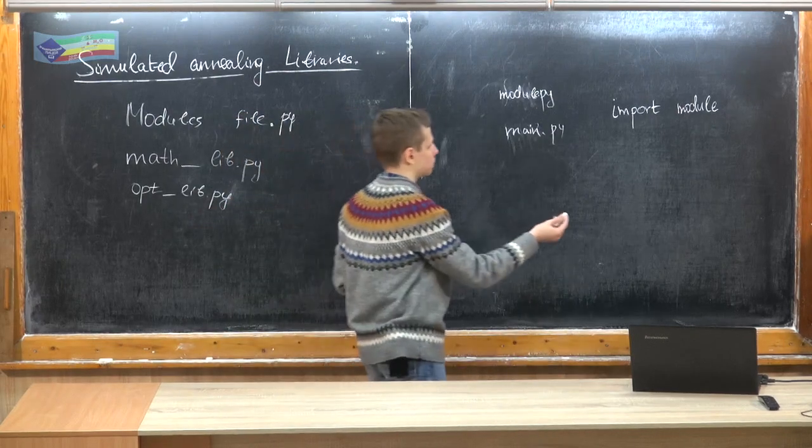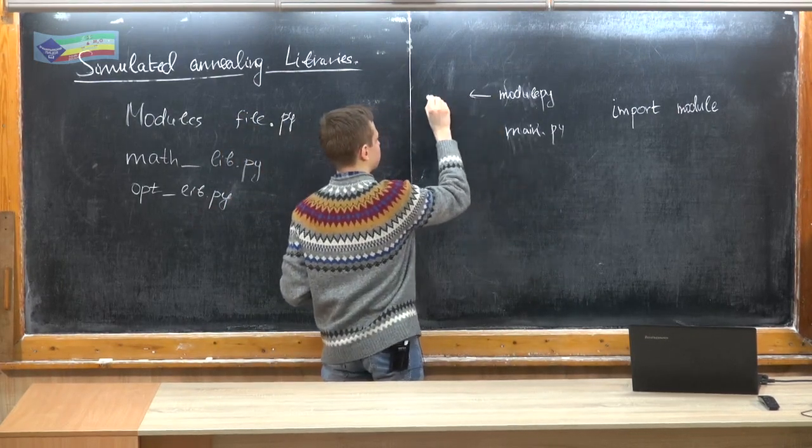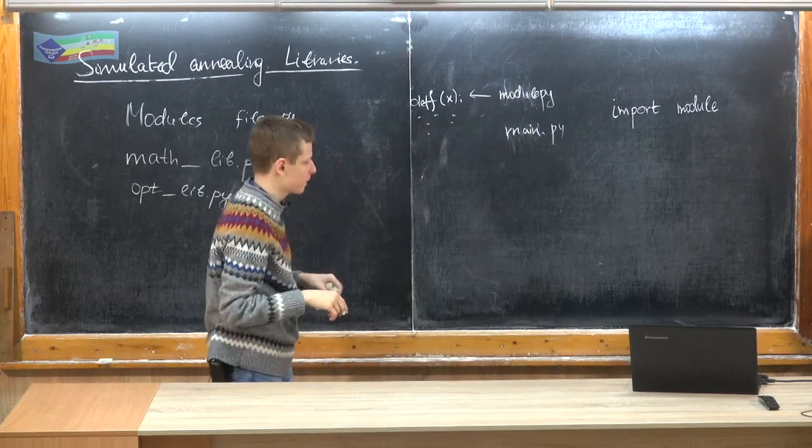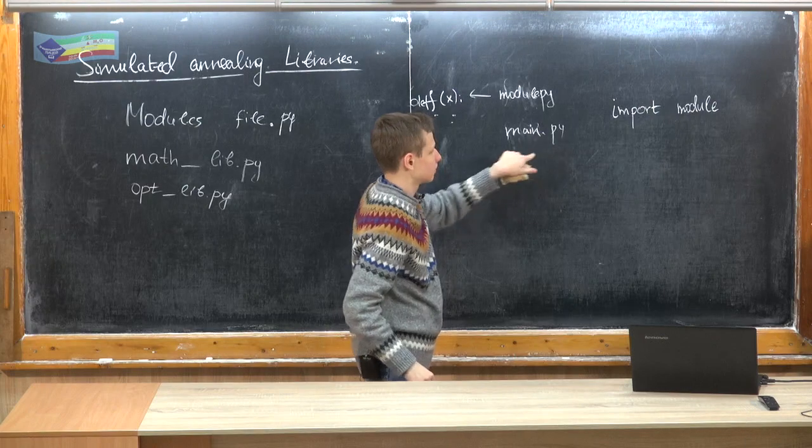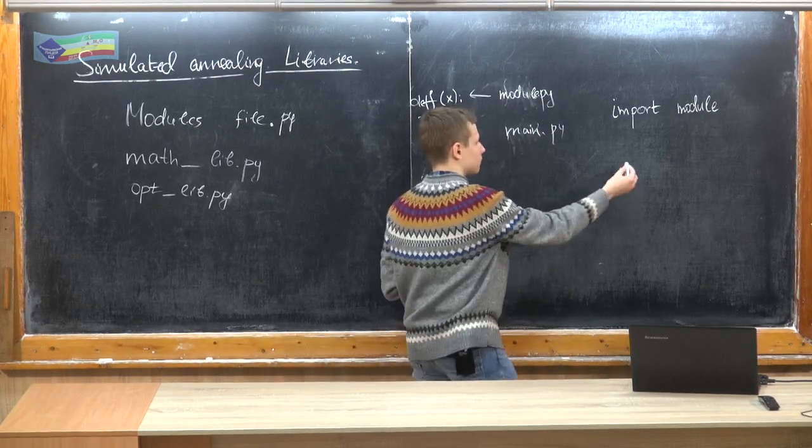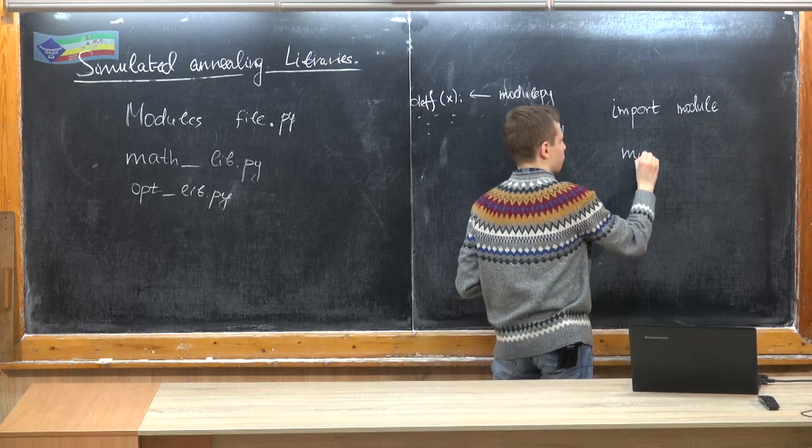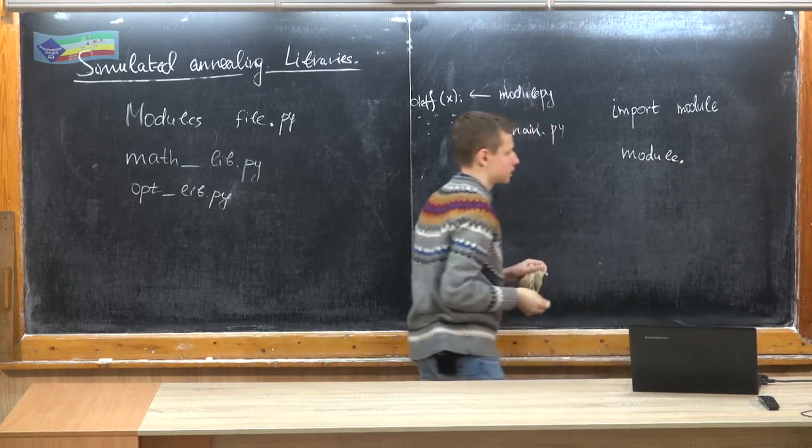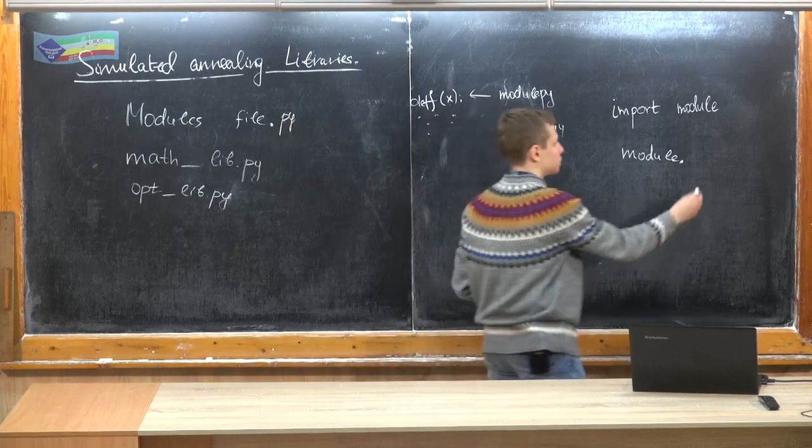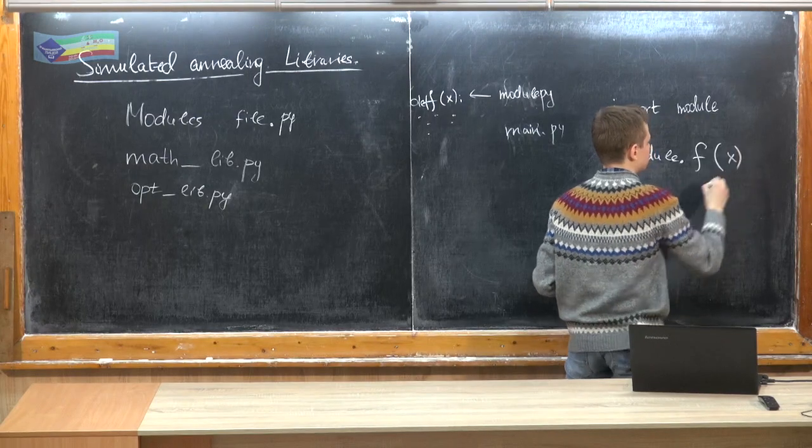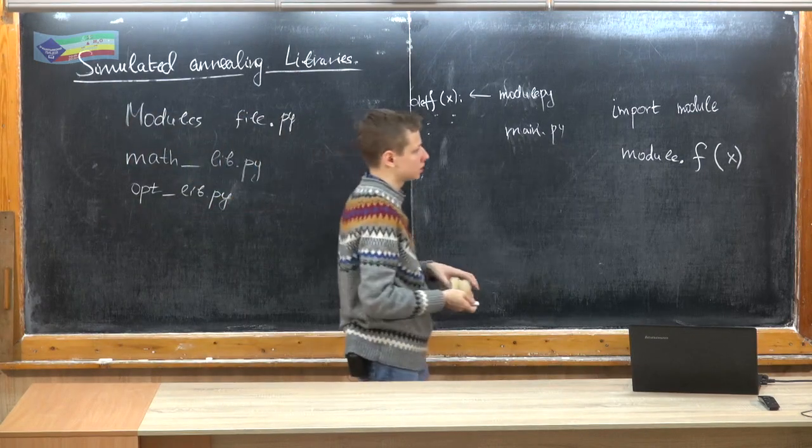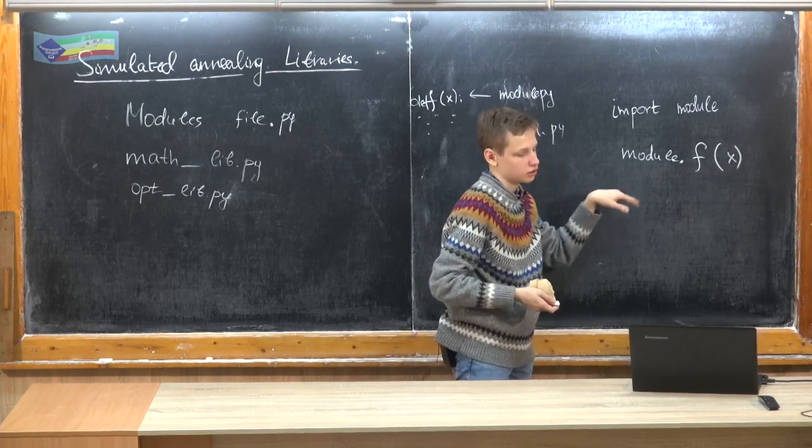But you'll need, for example, in module.py we have some function x. If we want to use this function in our main Python file, then we will need to write this syntax. We will need to start from module to say that this function is from module which we imported, and then we will write just name of function and then arguments that this function has. Pretty simple. And if we have several modules, we will just write the second module and third module and so on.